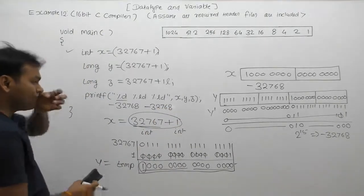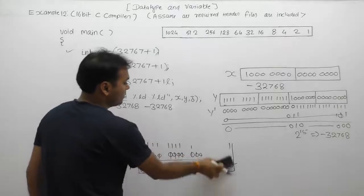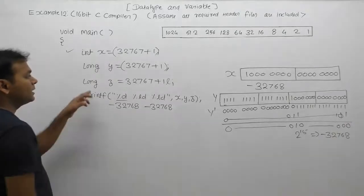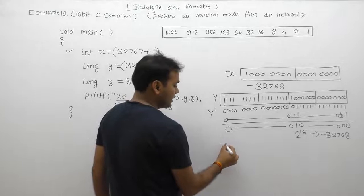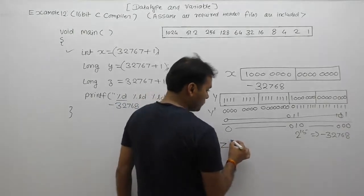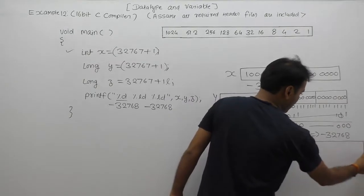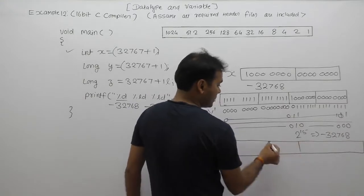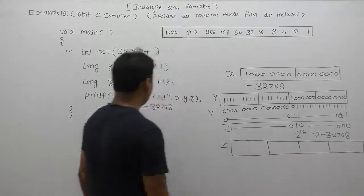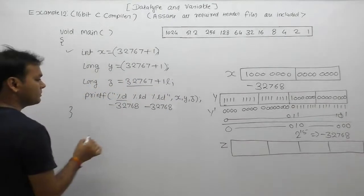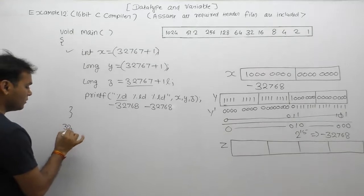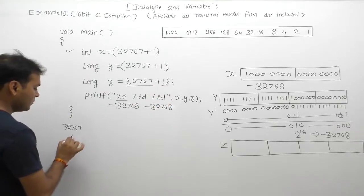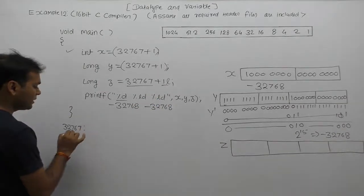Next, what about z? Since z is a long type variable, its data type is long, so how many bytes are allocated for z? There are four bytes — 32 bits. In this case, the addition is performed where the first operand is 32767 and the second operand is 1L. The suffix 'L' means long. So for 32767 as integer, its binary number is written in 16 bits.